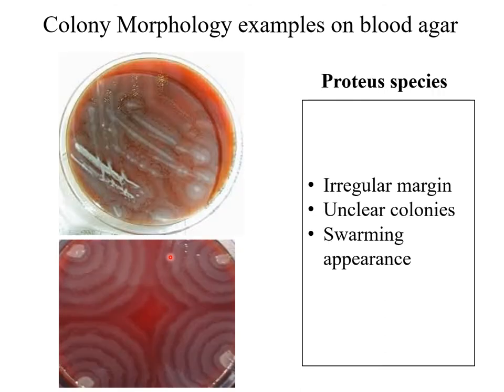Here we're looking at Proteus species. As mentioned, if you see this swarming appearance of the colony, think straight away of Proteus species. The colonies are irregular, have irregular margins, and are not clearly defined.